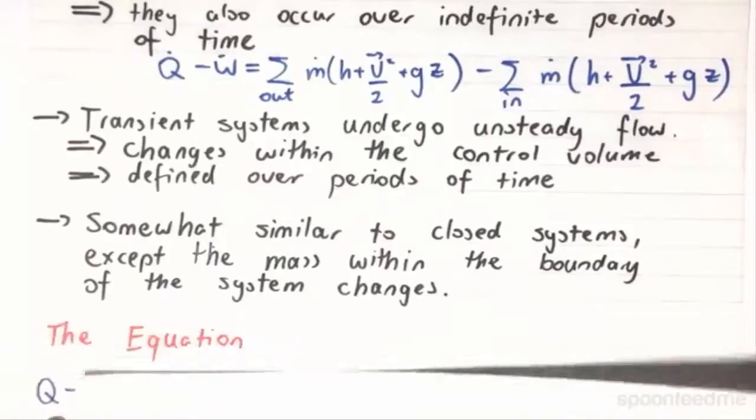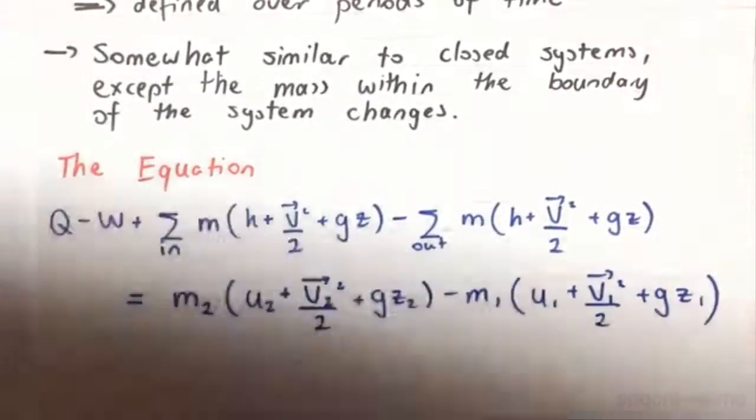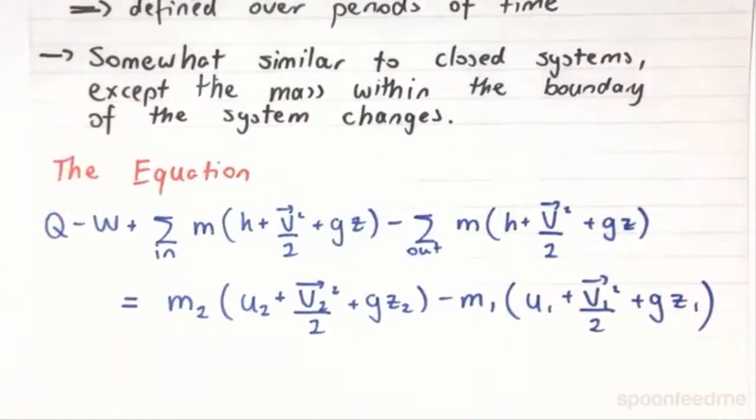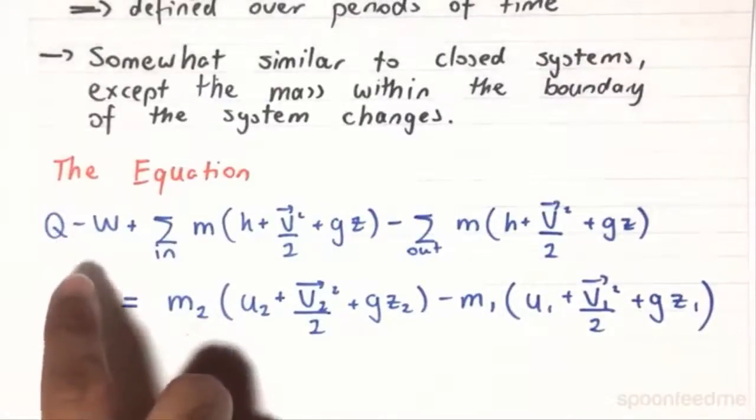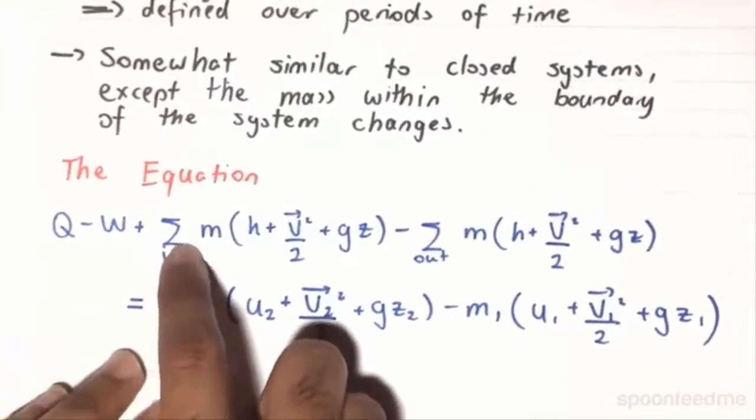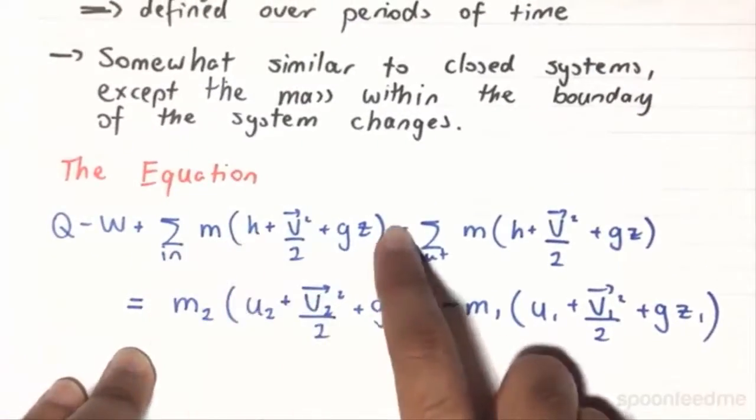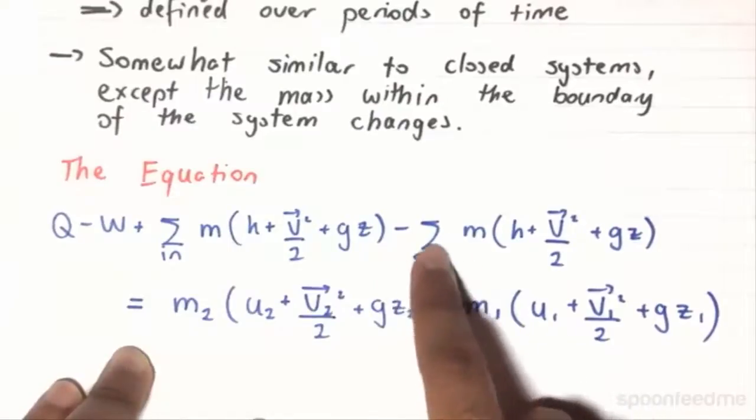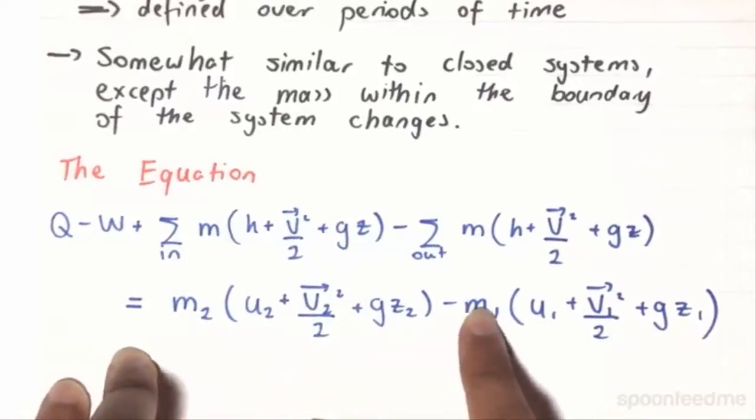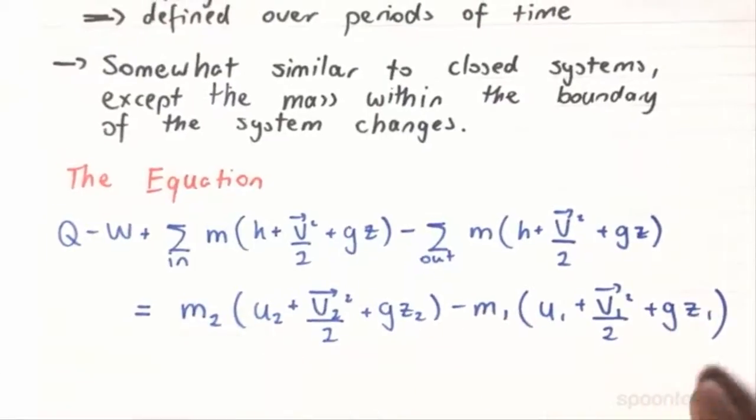So the equation that we will be using for this situation is as follows. We won't be looking at the derivation of this equation. You can look that up in your own time if it interests you. However, basically what it's saying is that the heat transfer minus the work transfer plus the sum of mass in times by this value over here minus the mass out times by that value there is equal to the mass at the second state, times by that value there minus the mass at the first state, times by that value over there.